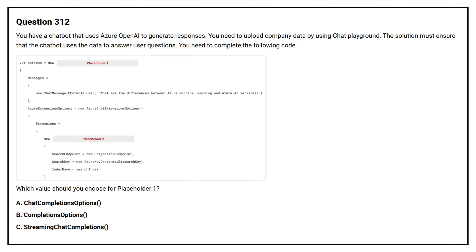Question number 312. You have a chatbot that uses Azure OpenAI to generate responses. You need to upload company data by using Chat Playground. The solution must ensure that the chatbot uses the data to answer user questions. You need to complete the following code. Which value should you choose for placeholder 1? Option A: Chat Completions Options.